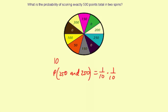So another way—because there's a 300 and 200—you could get 300 and 200. So probability of 300 and 200, each of those appears once, so that's going to be equal to 1/10 times 1/10.